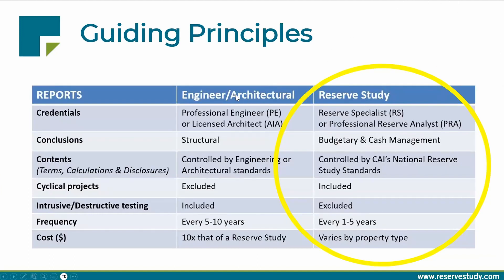There are two types of reports you can get: an engineering and architectural structural report, and reserve studies. Today we're talking about reserve studies — the budget and cash flow management where we deal with the components and make sure you have the cash to get those projects done on time. The structural analysis can tell you if a hairline crack is just cosmetic or significant, and any recommendations made in that engineering report are absorbed into the reserve study so you have a cash flow plan to get that project done.